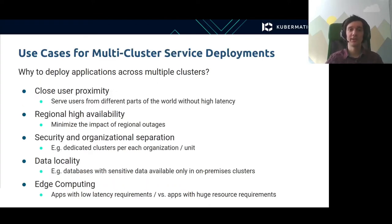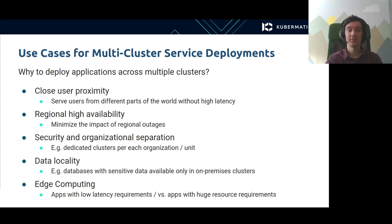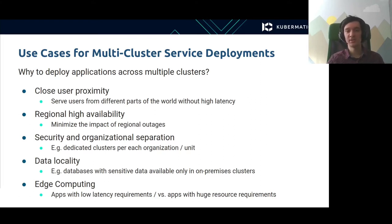Before we go into any details, let me talk about use cases for deploying applications across multiple clusters. One reason may be close user proximity — for example, serving users from different parts of the world without high latency. Another reason may be regional high availability, to minimize the impact of regional outages. Another reason may be security and organizational separation, such as dedicated clusters per organization unit. The next one may be data locality — for example, databases with sensitive data only available in on-premises clusters. And last but not least, a major use case is edge computing, where many smaller clusters are distributed across multiple locations due to low latency requirements.